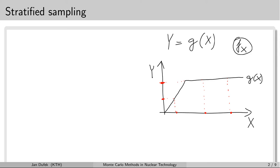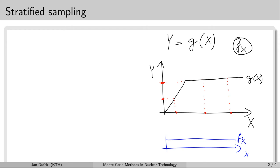When you look at the distribution of the output y samples, it very much depends on the probability density function for the input random variable x. Let's just assume for a while that the PDF for the input variable x is flat — a uniform distribution between the minimum and the maximum value, which can be for instance here.